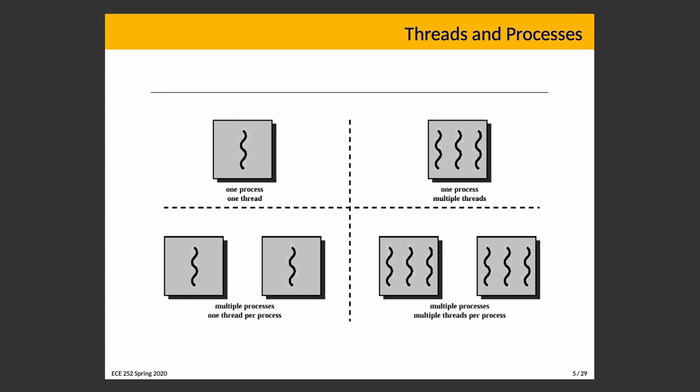The bottom left quadrant is what we introduced in this course — multiple processes, each with only one thread, doing one thing at a time. That's our model for a parent process creating a child process with fork. The top right — one process with multiple threads — is what we're learning today, and the multiple threads approach will dominate most examples in this course.